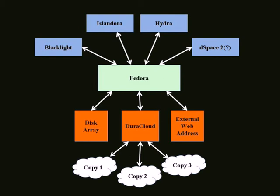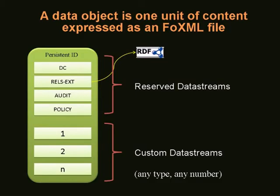The basic idea behind Fedora is there are digital objects. There are four kinds of objects; data objects are the main one. Data objects are there to represent one unit of content — any way you want. Fedora gives you a set of buckets that you put data into to represent together in one object. Your architecture for how you use your repository is all about designing your objects to match the data the way you want to use it.